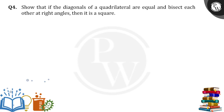Hello everyone. Show that if the diagonals of a quadrilateral are equal and bisect each other at right angles, then it is a square.